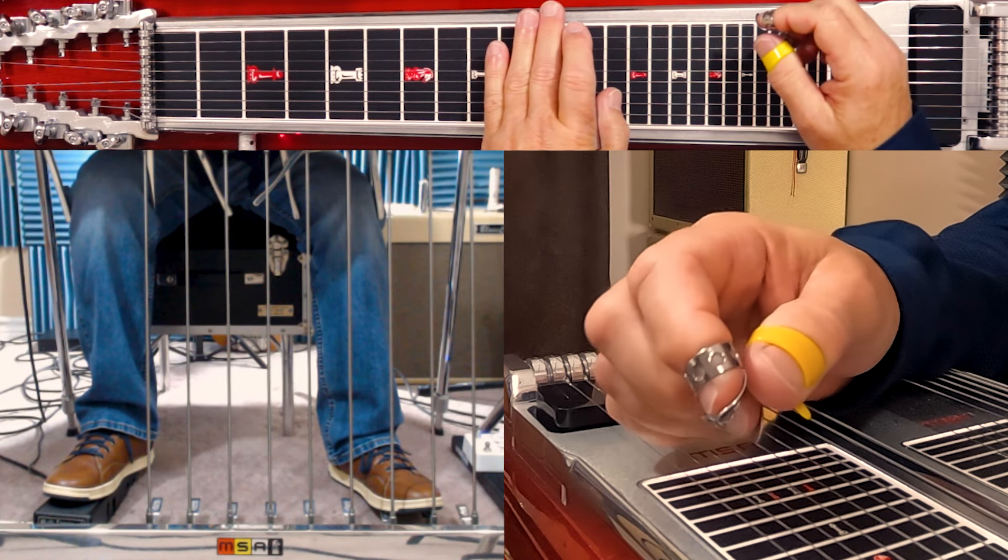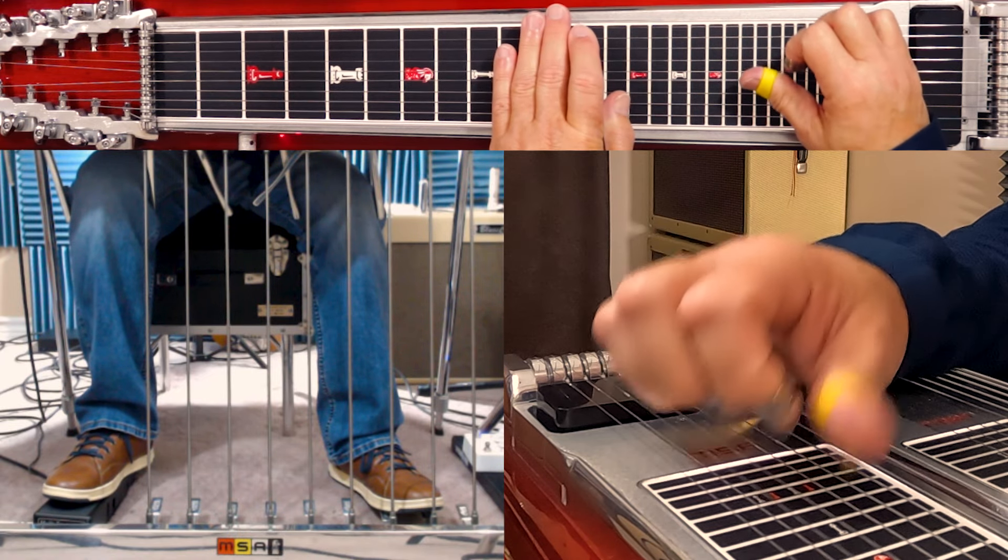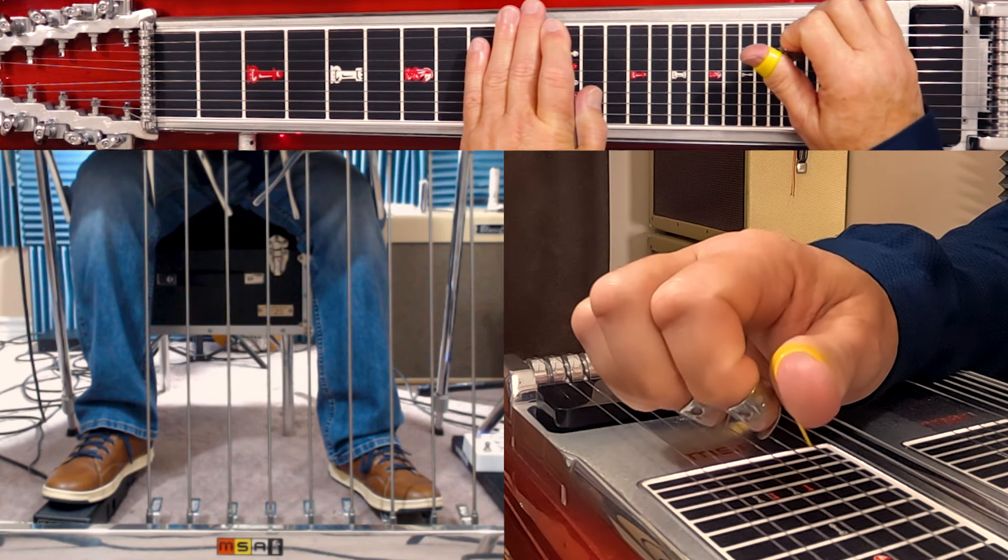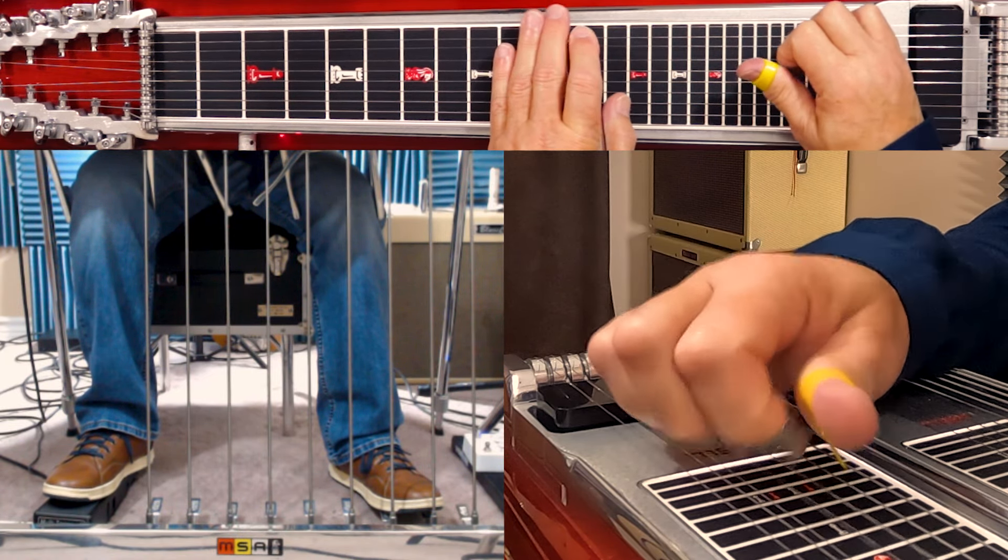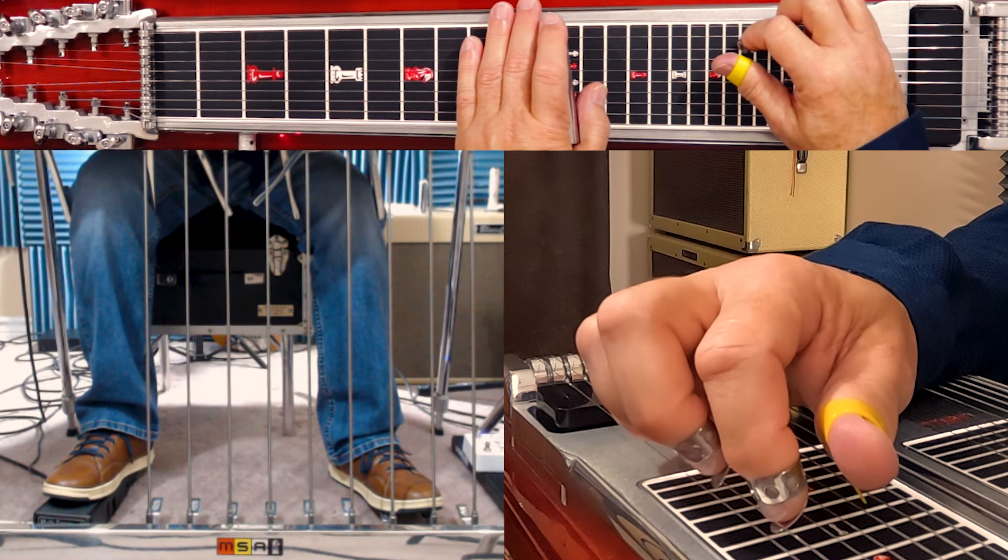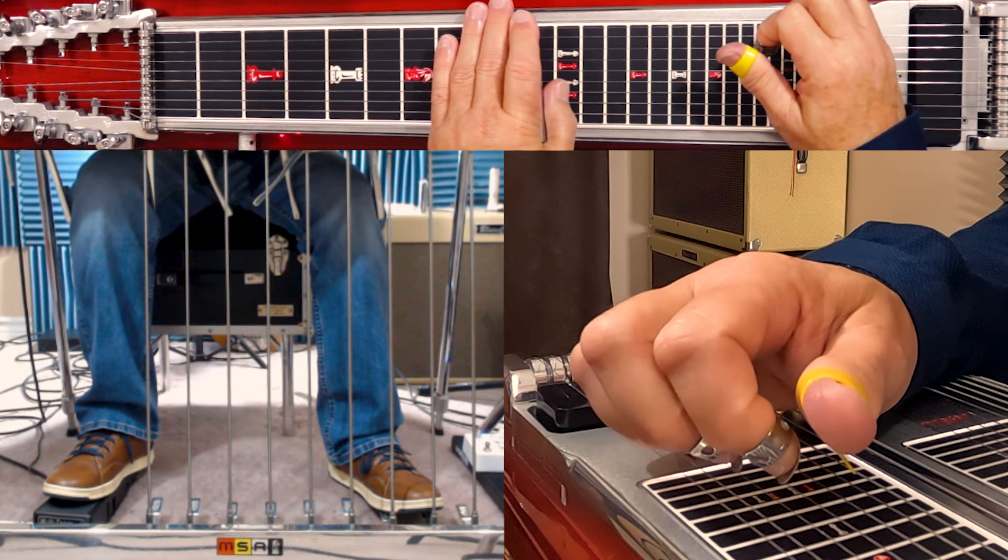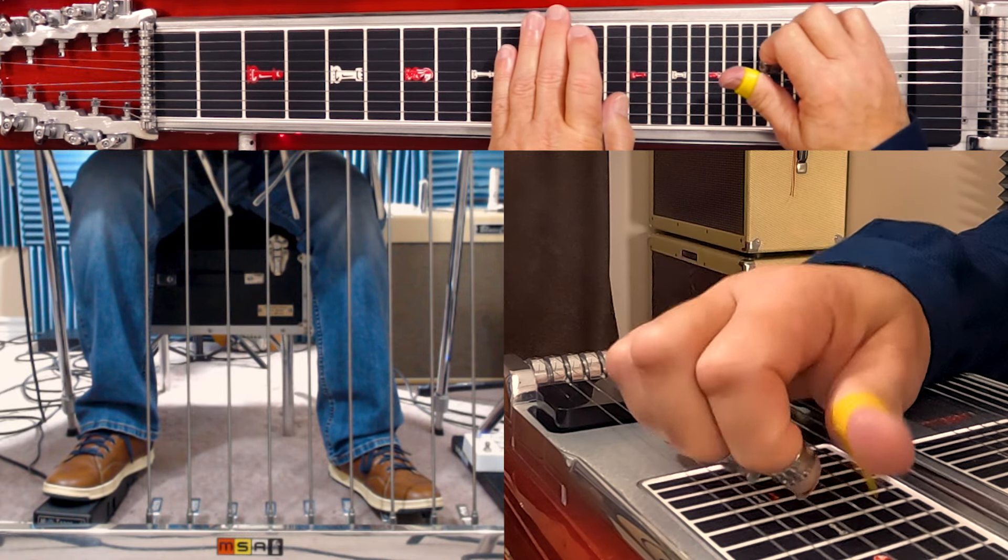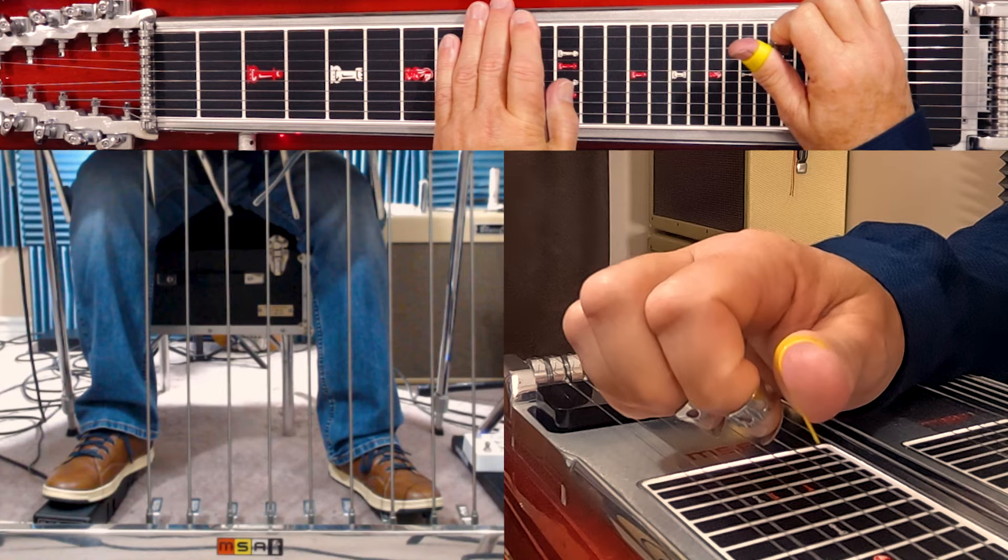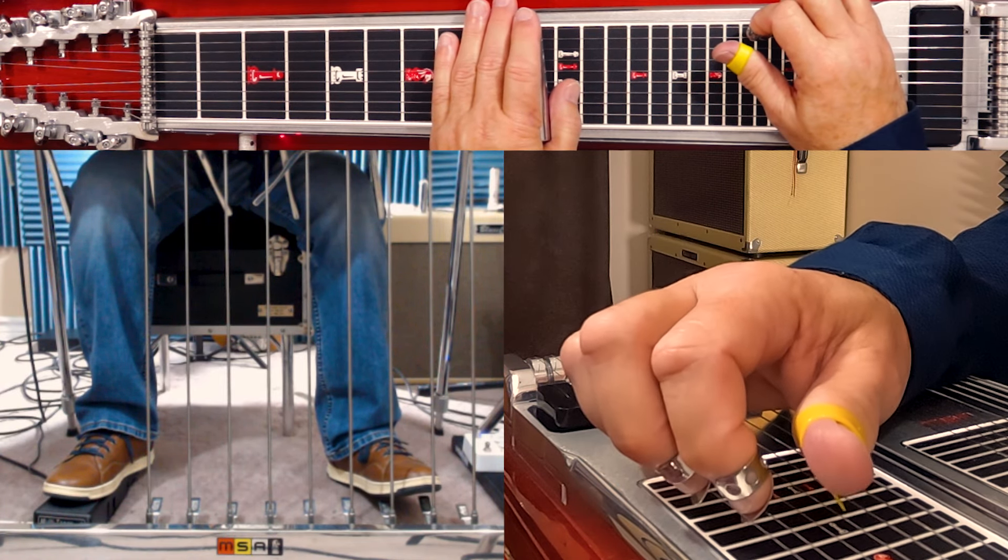Then when we hit three and four here at the twelfth, the last time, we slide it down one fret. Then we hit three and two. Slide that down from eleven to ten. Now we're down to tenth fret. We play one and two, no pedals.